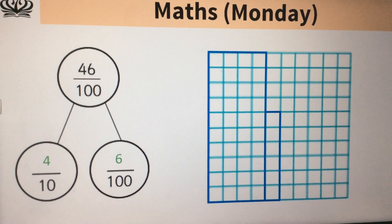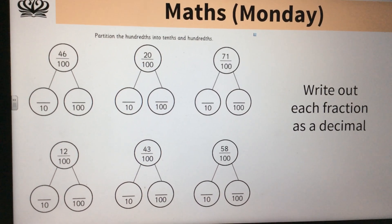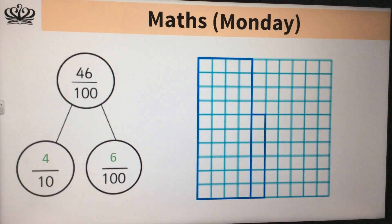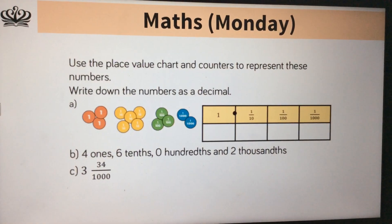So, have a go, you've got those are the first two, you've got the other four to have a go with. If you're not sure, then look back at those examples that I've just gone over with you.